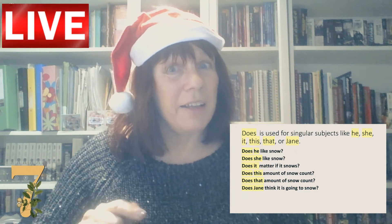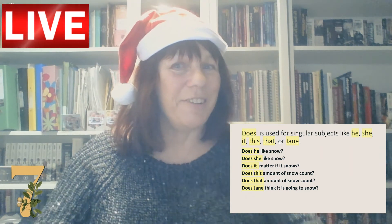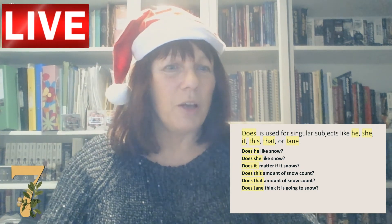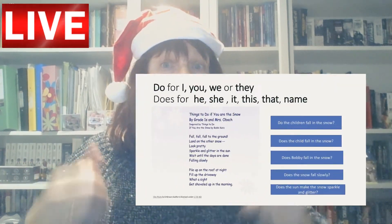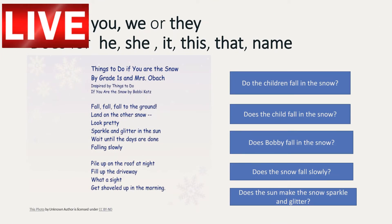So don't confuse 'do' and 'does' — get this right and the rest of the work we're doing will follow. Use 'do' for I, you, we, or they. Use 'does' for he, she, it, this, that, or anybody's name.